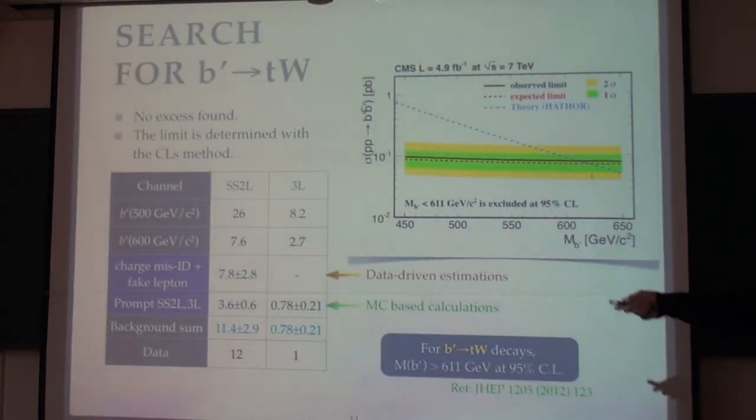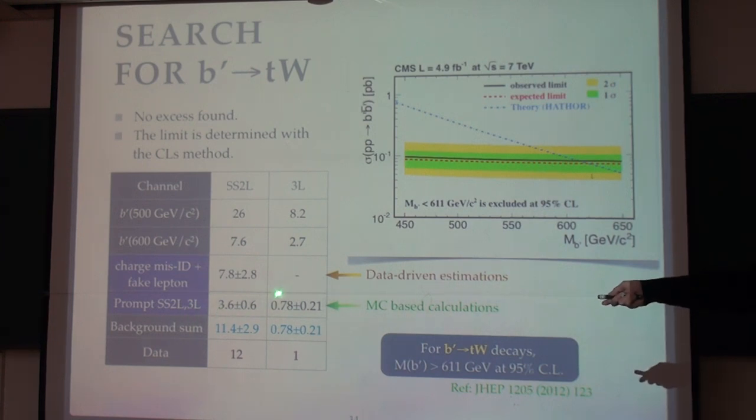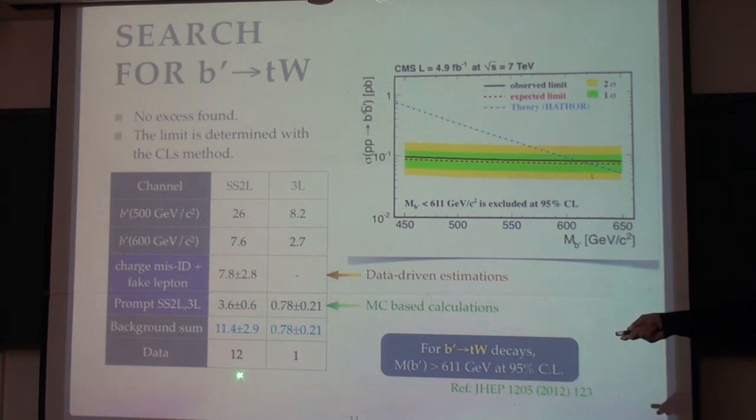Basically we don't see excess. From data we see 12 events in the same-sign dilepton channel and one event in the trilepton channel. We have this Monte Carlo driven calculation and this data-driven estimation, which is almost a factor of two larger than Monte Carlo. This means the histogram should be boosted by factor two. If we add up this data-driven version plus other backgrounds, you get the total background which is similar to data. Based on this, we can set a really strong limit of 611 GeV, and we have a paper published in JHEP.